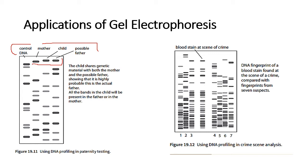Looking at the paternity test example, you can see the child and the father share two bands at the same location. There may be additional bands in the father that the child doesn't have, which can also appear in the mother. Overall, there seem to be enough similarities between the child's and father's bands to suggest this could be the child's father. The bands present in the child would be present either in the father or in the mother.